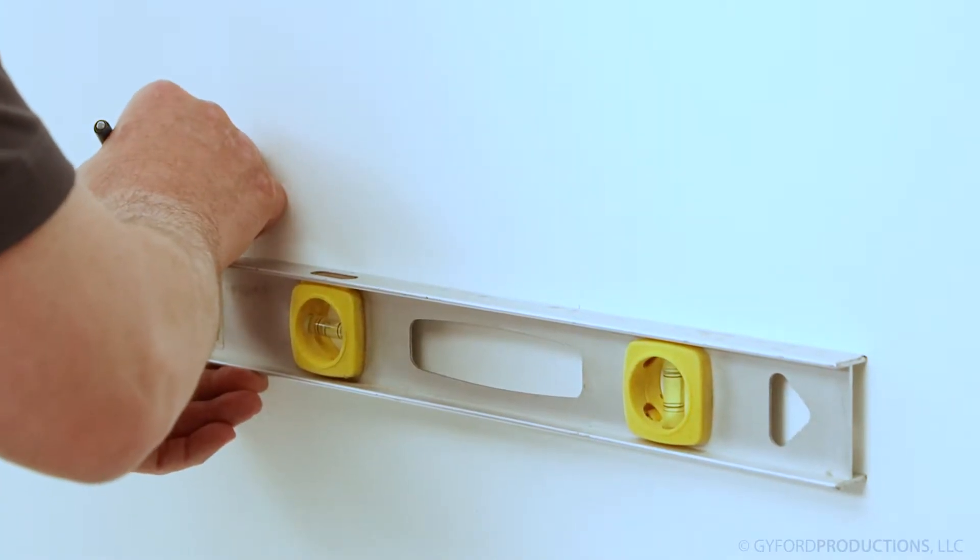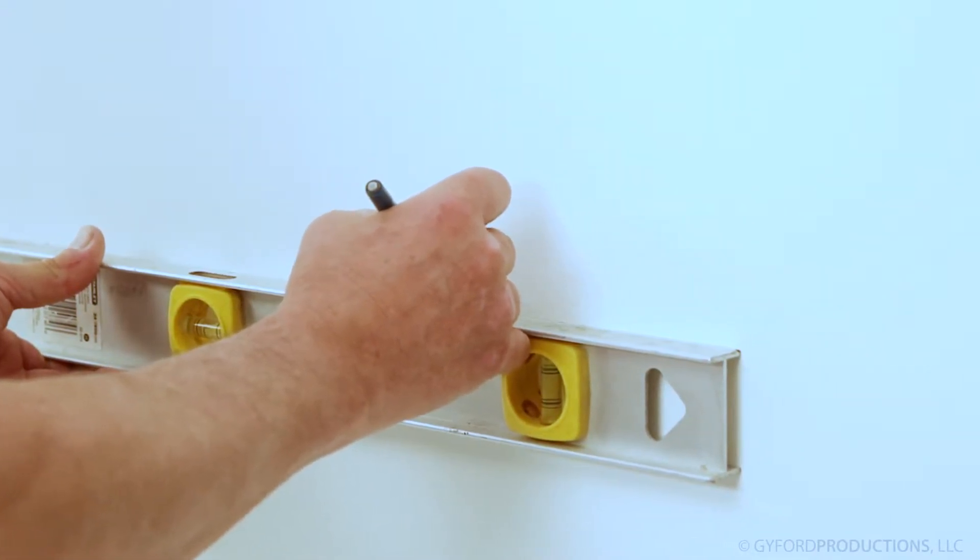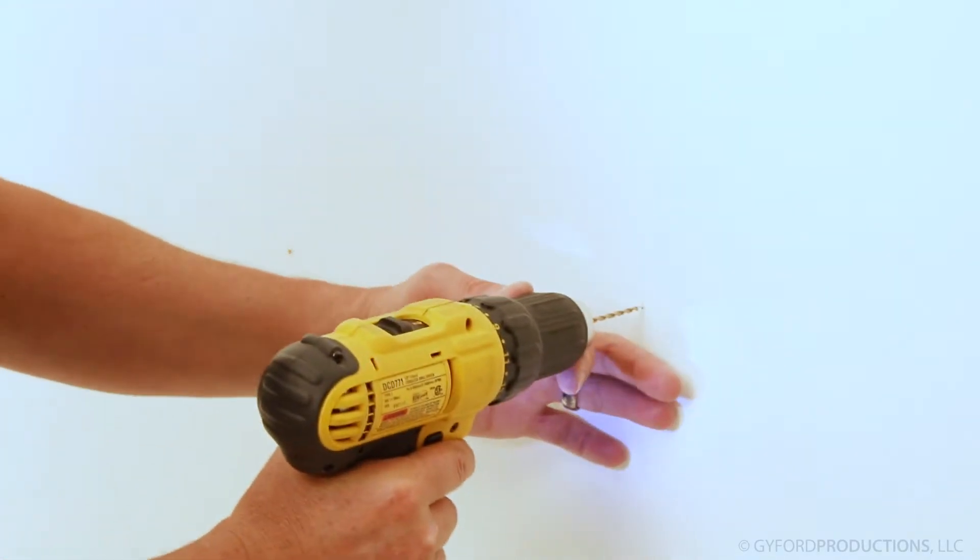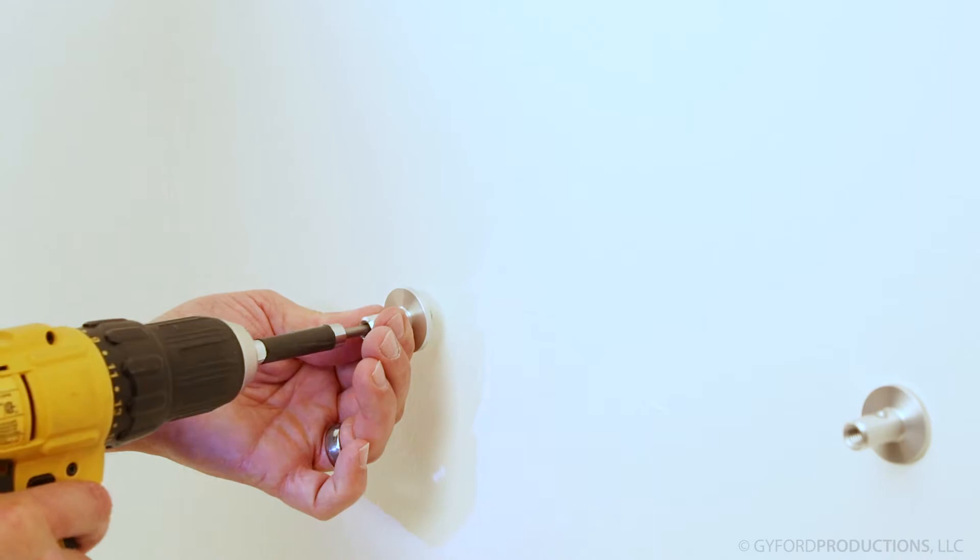Level your marks on the wall along with your desired vertical distance. Drill pilot holes in wood or holes for your anchors in drywall or masonry. Screw in all four base mounts.